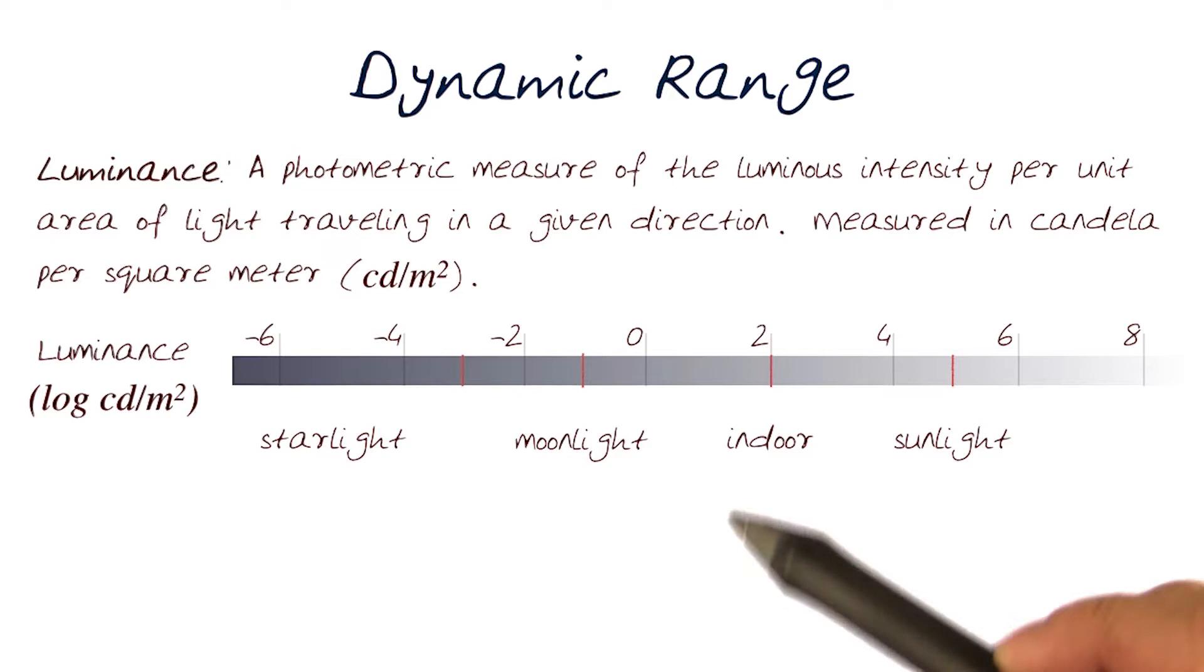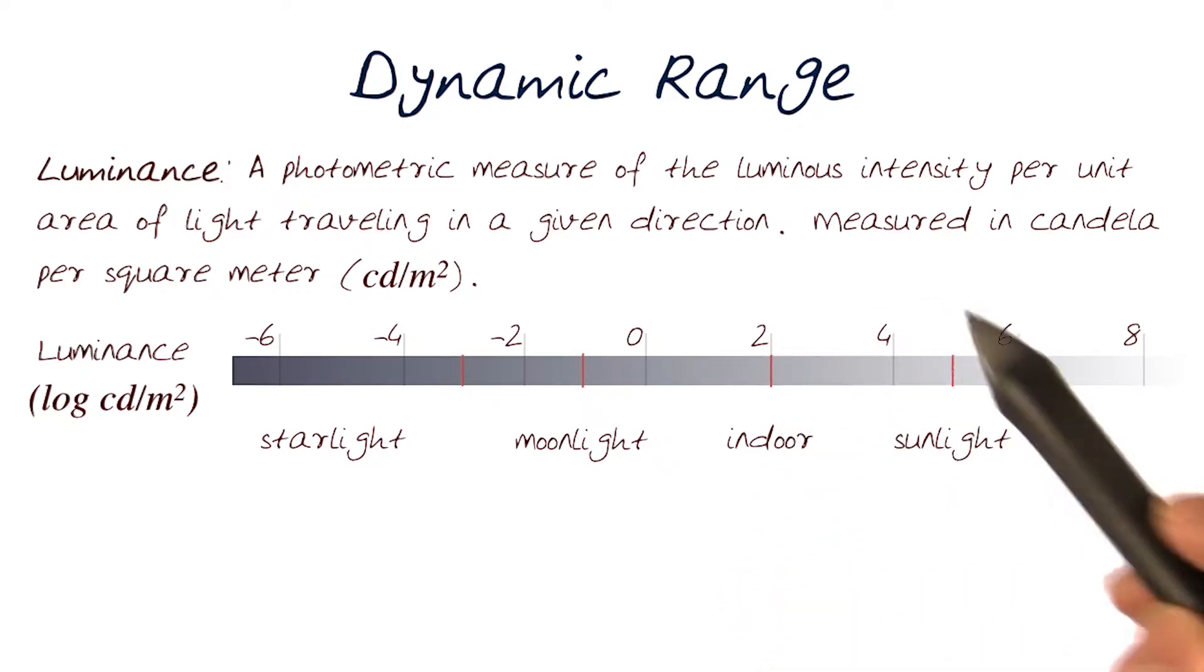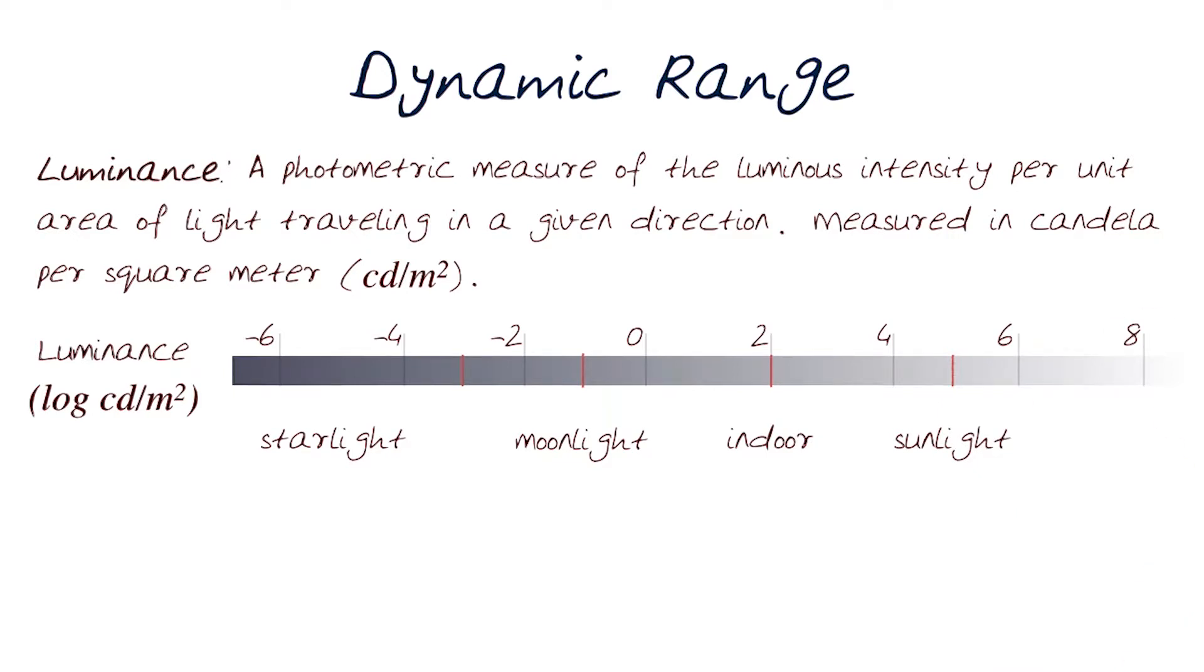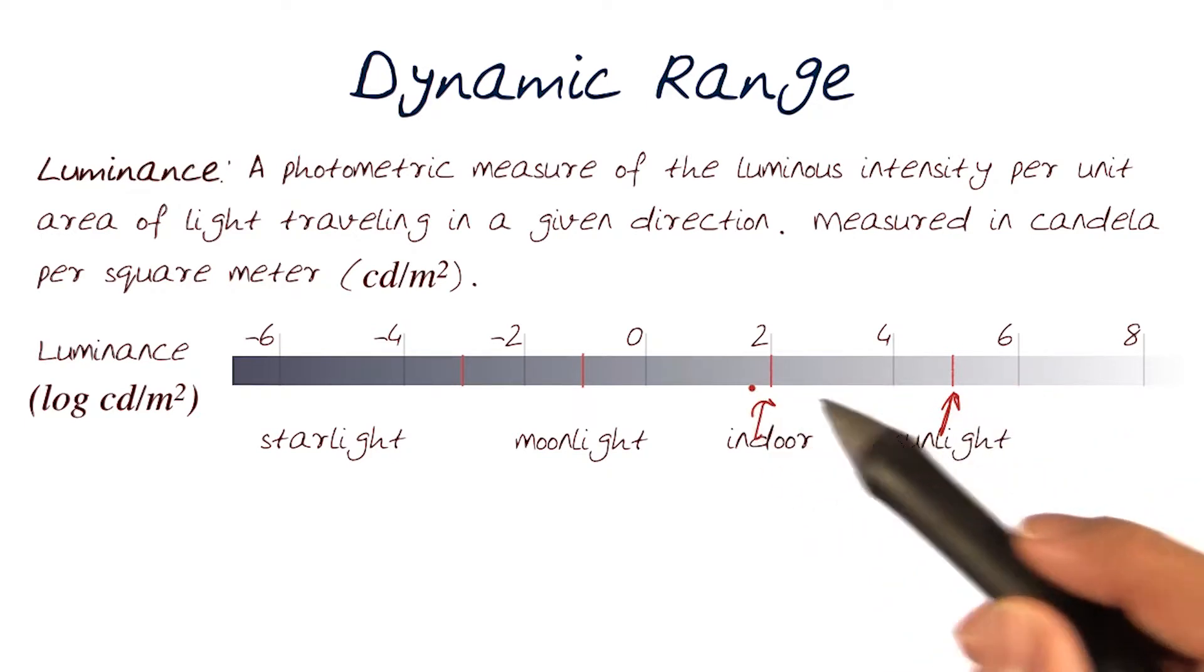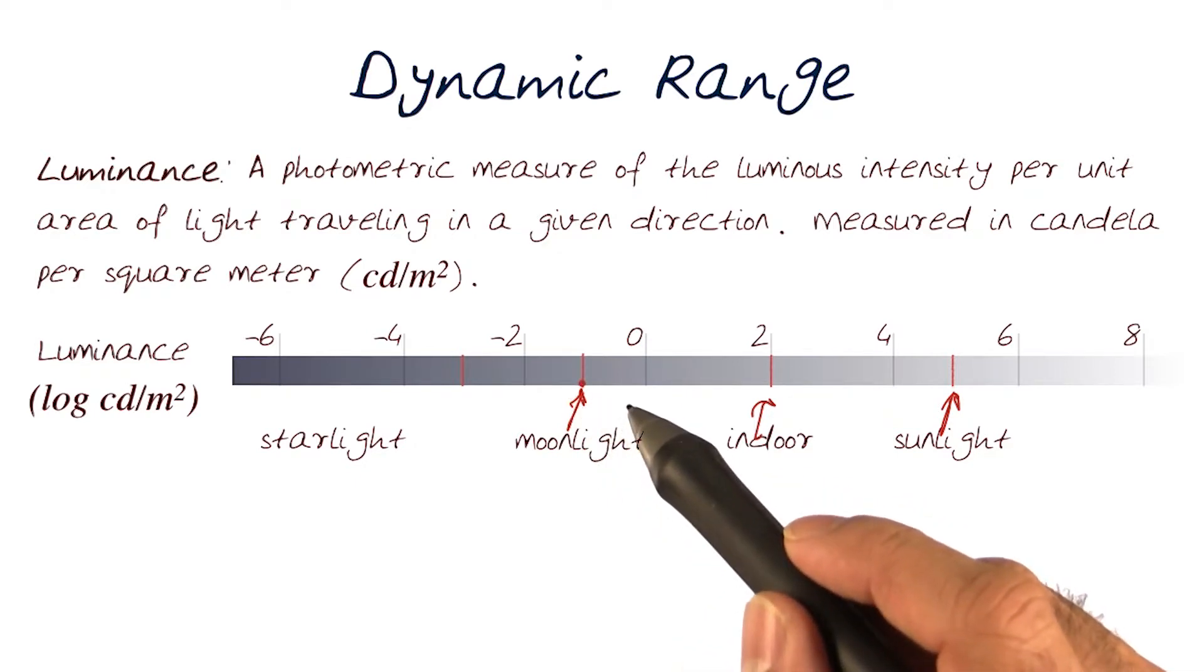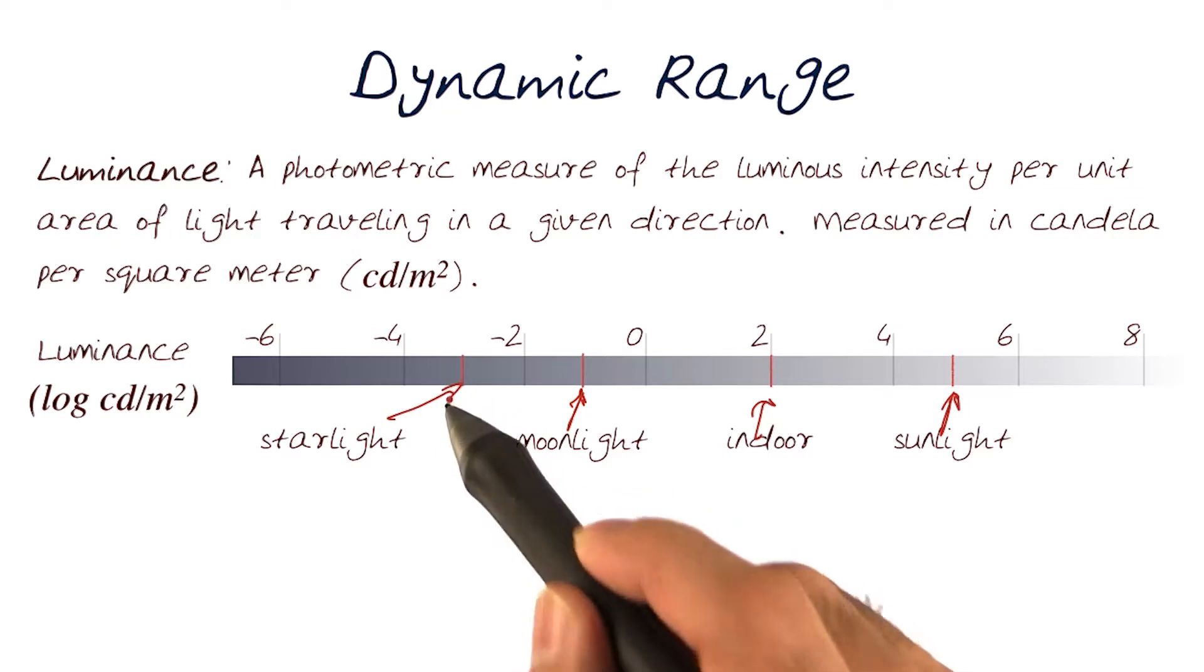And I've just now marked in this range basically indoor and sunlight. Sunlight is much brighter, and there's even something much brighter than that. Indoor images would have these types of ranges here. This point is showing sunlight, this would be indoor, these are the kind of images we looked at. If the scene was lit by just moonlight, that's what we would have, and this is starlight.